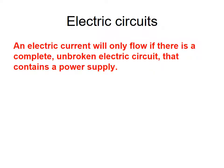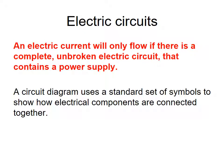Now let's get into the nitty-gritty of electric circuits. An electric current will only flow if the circuit is complete and contains some form of power supply like a battery, a cell, or a mains power supply. A circuit diagram uses a standard set of symbols to show how electrical components are connected together, so you have to know the symbols.